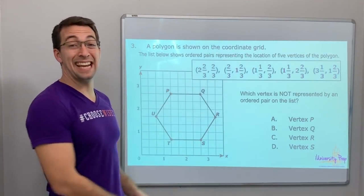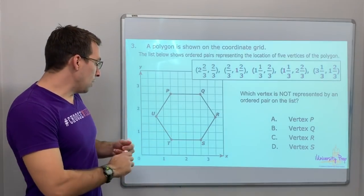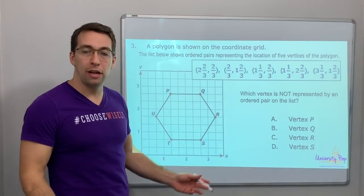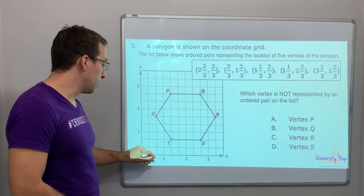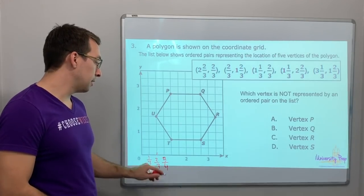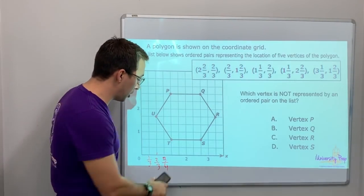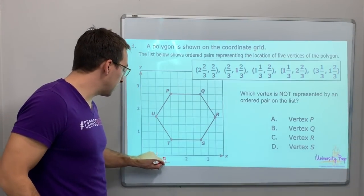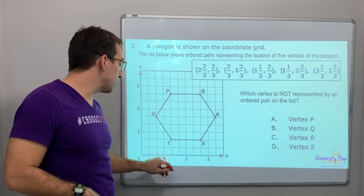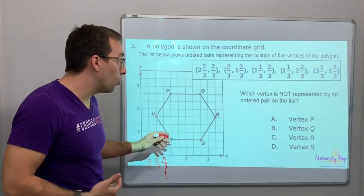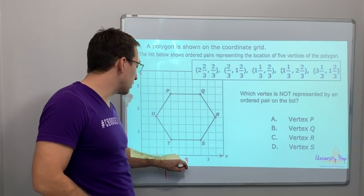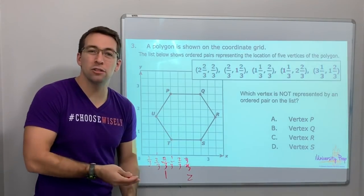For the first time we have fractions inside of the coordinate plane. If you have multiple lines in between the whole numbers, you're going to have fractions. So this is one-third, two-thirds, three-thirds — and three over three is one. Then you'd have one and one-third, one and two-thirds, and then two. That's how fractions work in the coordinate plane.